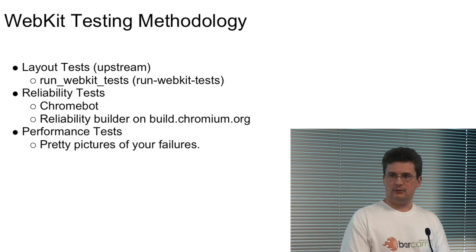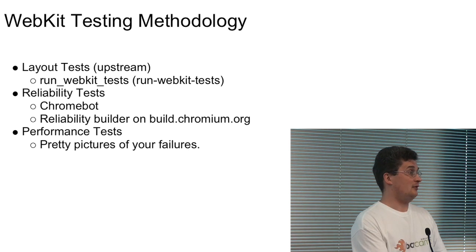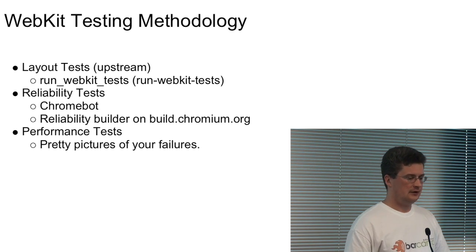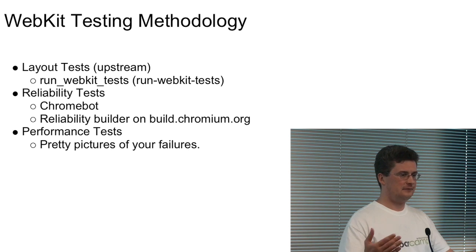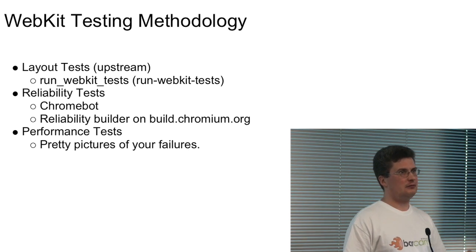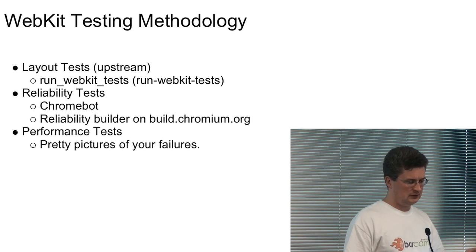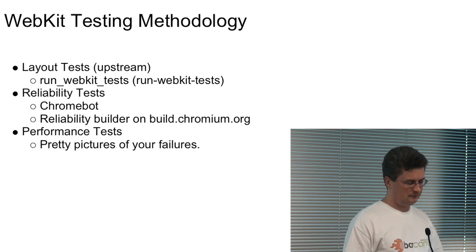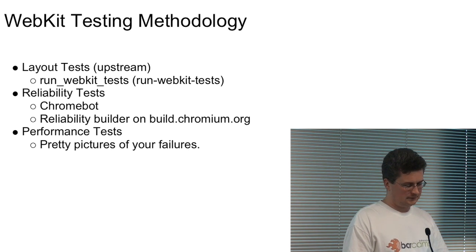Layout tests are born like this: any time you find a regression, whenever you fix a bug, you submit a layout test with it to make sure that bug is covered. This is how you obtain coverage — you're reacting rather than forward thinking. There are also test suites: W3C suite, Hixie's SVG suites, Batik SVG, CSS suite. Those rarely fail because they're relatively simple.